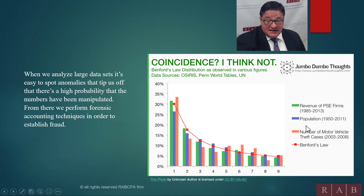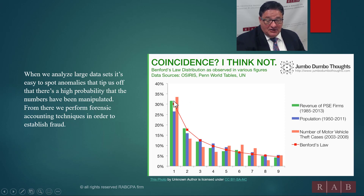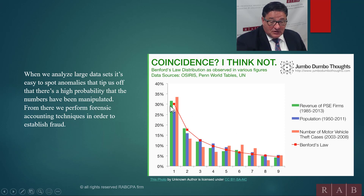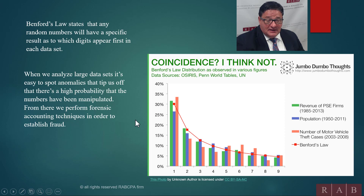Looking at some data sets here — take this motor vehicle theft case, for example. You can see it doesn't follow Benford's Law. The histogram should be like this, but here, for example, it should be 30% and it's around 37%. That's telling you there's fraud. How could there be fraud in motor vehicle theft? Sometimes people will steal their own car if they have a large balance on the auto loan. We've done work for insurance companies, and that's what you see — fraud in the data. Then you go find it.